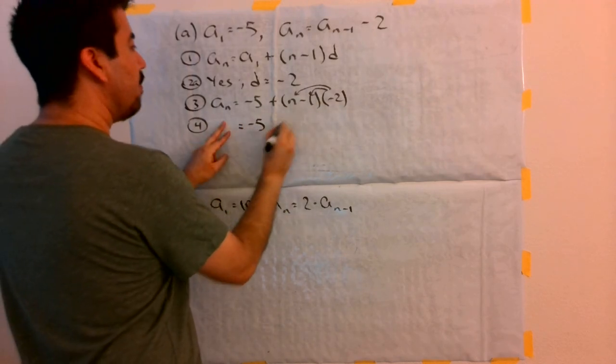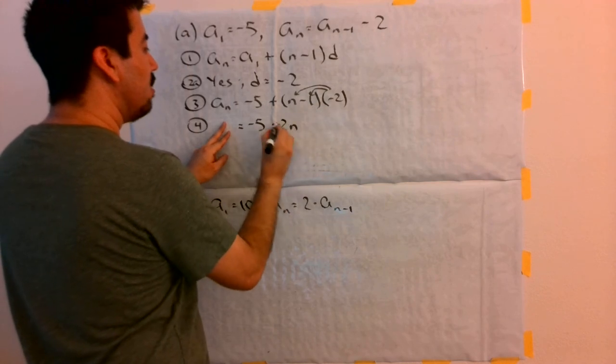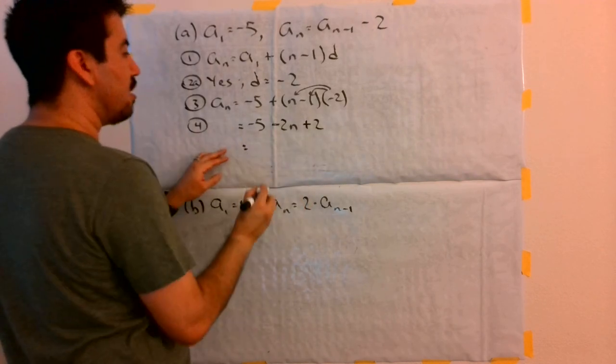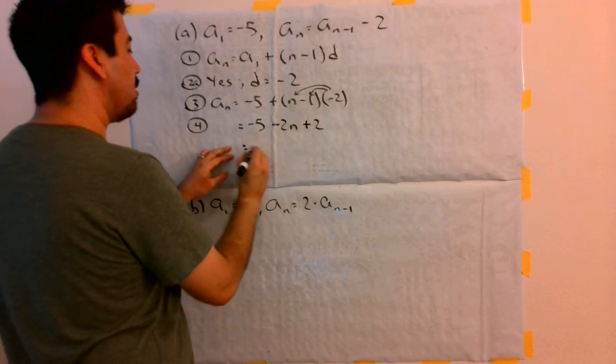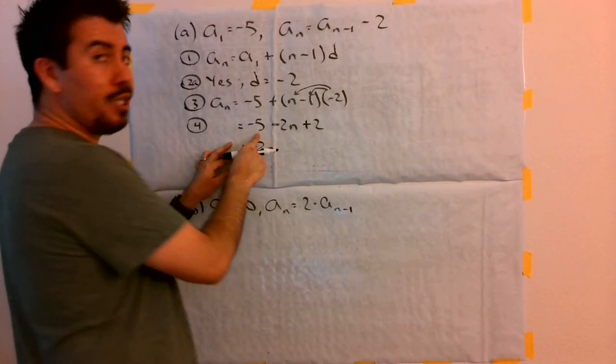So, we get negative 5, and then negative 2 times n is negative 2n, and then negative 2 times negative 1 is positive 2. Now, in order for me to simplify it again, I want to put the term with the letter n in front, and then I simplify by combining like terms.